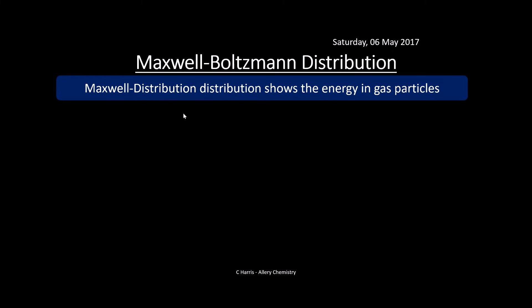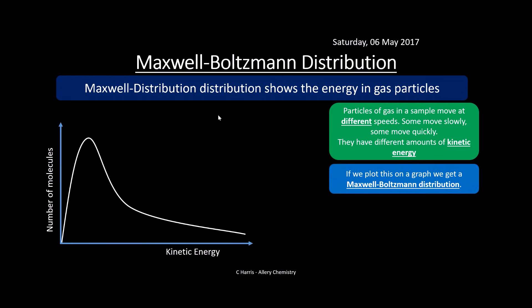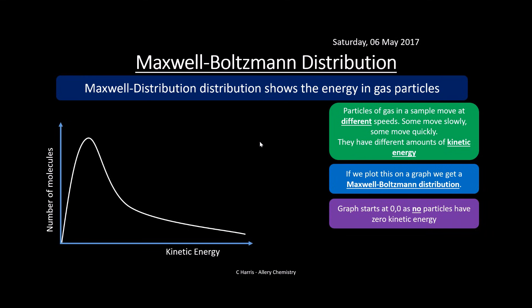You might see something called the Maxwell-Boltzmann distribution. This shows the energy in gas particles. Particles in a gas sample move at different speeds — some slowly, some quickly — so they have different amounts of kinetic energy, and we can display this on a Maxwell-Boltzmann plot. The graph is normally shown with number of molecules on the y-axis and kinetic energy on the x-axis. The graph always starts at zero because no particles have zero kinetic energy unless you're at absolute zero, which is incredibly unlikely.